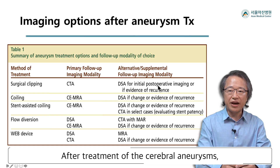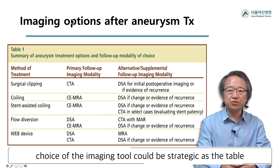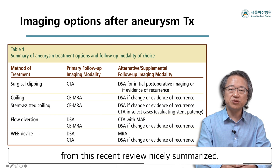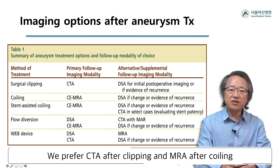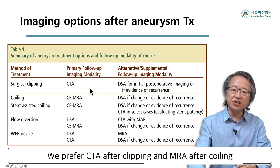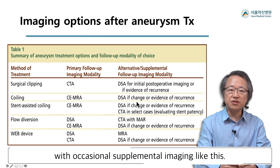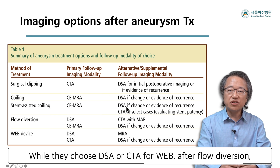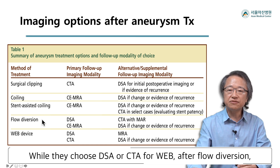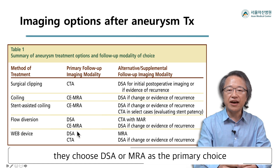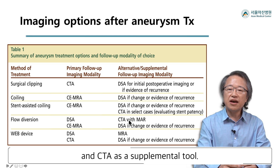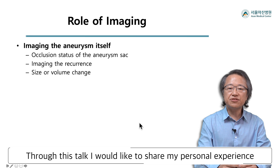After treatment of the cerebral aneurysms, choice of the imaging tool could be strategic, as this recent review nicely summarized. We prefer CTA after clipping and MRA after coiling with occasional supplemental imaging. While they choose DSA or CTA for WEB, after flow diversion they choose DSA or MRA as the primary choice and CTA as a supplemental tool. Do you agree?